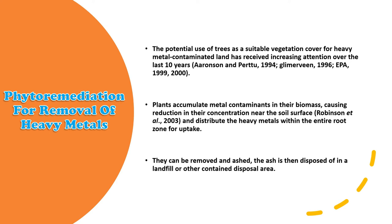For heavy metal control, trees as sustainable vegetation cover for heavy-metal-contaminated land receive increasing attention. Plants accumulate metals in their biomass, reducing concentrations at the soil surface and distributing heavy metals within the root zone. The harvested plants can be incinerated and the ash disposed in landfills or contained disposal areas to prevent heavy metals from spreading into the atmosphere.